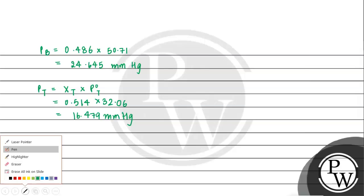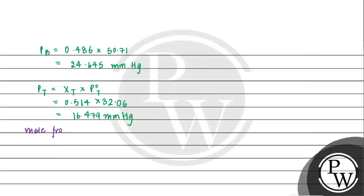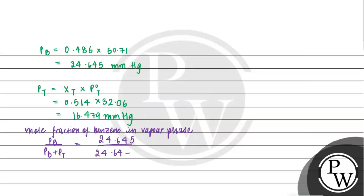Now we will calculate the mole fraction of benzene in vapor phase, which will be equal to partial pressure of benzene divided by partial pressure of benzene plus partial pressure of toluene. Putting in values: 24.645 divided by 24.645 plus 16.479, which gives 24.645 divided by 41.124, which will be equal to approximately 0.599.